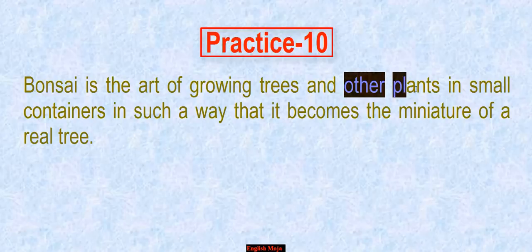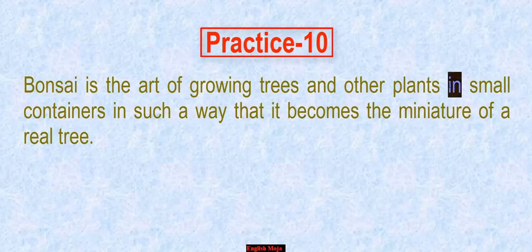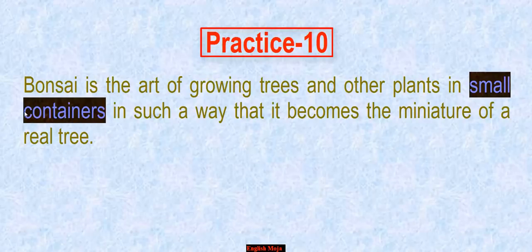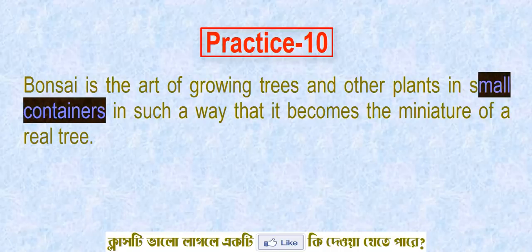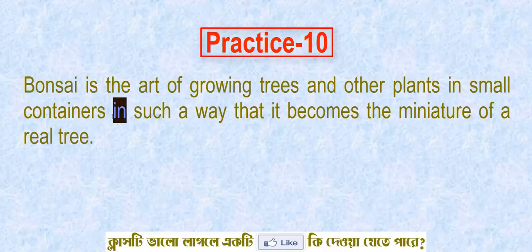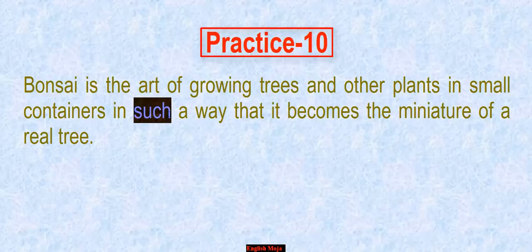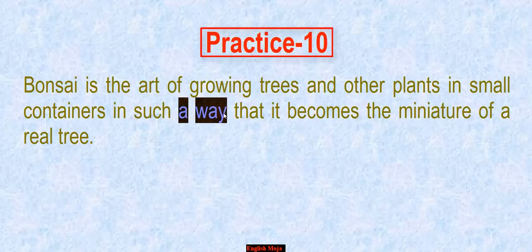If you have to add the noun, then you can add the noun. 'In' — in preposition. 'Small' — adjective. 'Containers' — this is the noun that contains the adjective. 'In' preposition and adjective. This is the adjective. 'A' is the article. That is the noun.